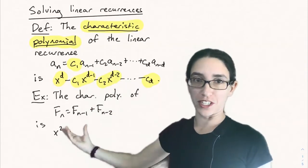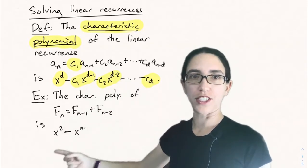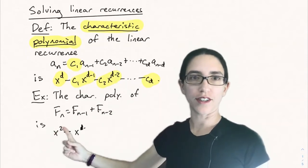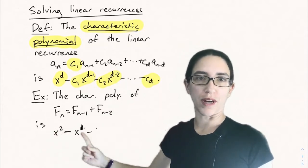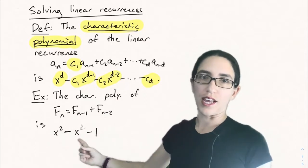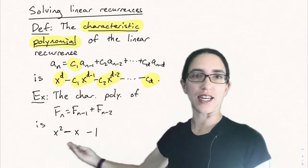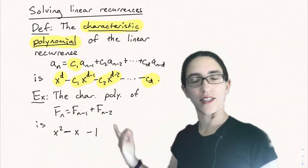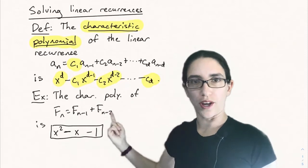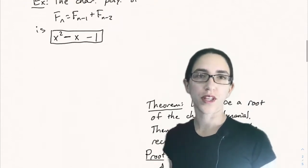As an example, the characteristic polynomial of the Fibonacci sequence: because it's depth 2, we start at x squared, and we get x squared minus x minus 1. That's because the coefficients c1 and c2 are both 1.